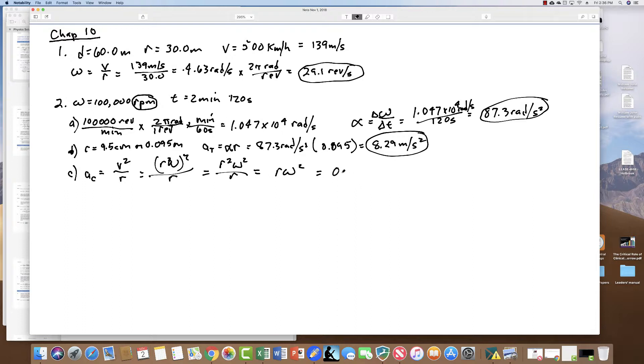This equals 0.095 times 1.047 times 10 to the fourth radians per second squared, and that equals 1.04 times 10 to the seventh meters per second squared. If you divide that by 9.8, that gives you 1.06 times 10 to the sixth g.